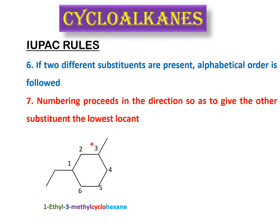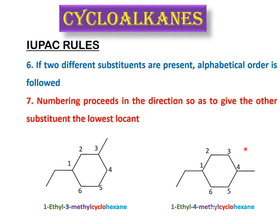In a second example with ethyl and methyl substituents, we again start numbering from the ethyl carbon (carbon 1) due to alphabetical order. Whether we proceed clockwise or anti-clockwise, the methyl falls at carbon 4 in both directions. So the name is 1-ethyl-4-methylcyclohexane.